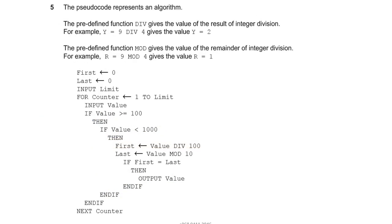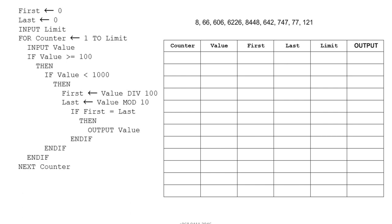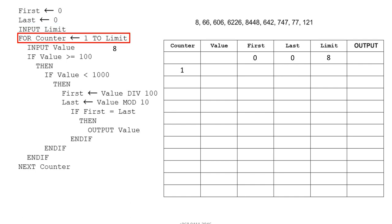The pseudocode represents an algorithm using the DIV and MOD functions. DIV gives the quotient — for example, 9 DIV 4 = 2. MOD gives the remainder. The algorithm starts with first = 0, last = 0, then INPUT limit. The input limit is 8, so the FOR loop runs from counter = 1 TO 8 — that is, it executes 8 times.